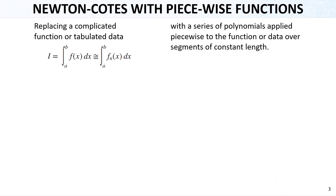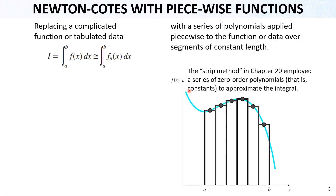Another Newton-Cotes approximation for integration uses piecewise functions. Again we have a difficult function to integrate, and we represent it with another function, but this time piecewise — a series of polynomials applied piecewise over segments of constant length. Basically we use piecewise linear functions, defining some points on the actual function and drawing lines of equal length starting from a and dividing into n segments. This is the strip method introduced in chapter 20, using a series of zero-order polynomials applied piecewise.